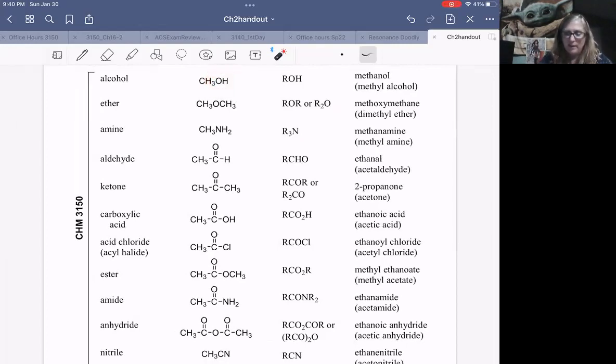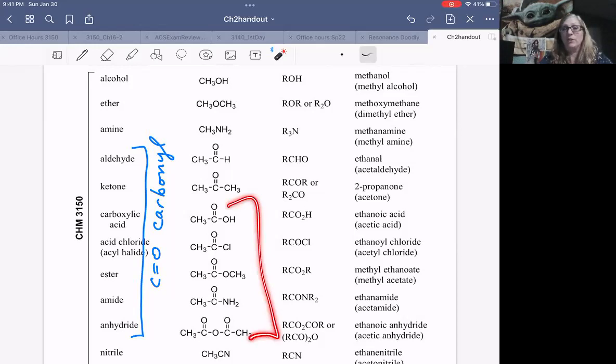An alcohol is what you call it when you have an OH. It's called an ether when you have an oxygen, but now you have a carbon chain on either side. We call it an amine when you have a nitrogen attached. This entire group, this subcategory, all of these are related because they have a CO double bond called a carbonyl functional group. When you have a hydrogen attached, we call that an aldehyde. When you have just carbon groups on both sides, we call that ketone.